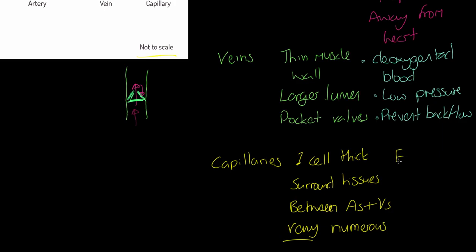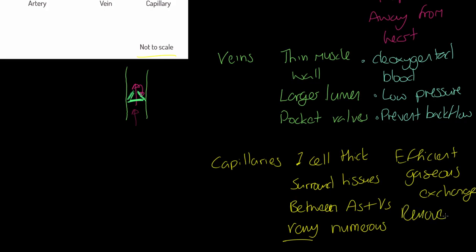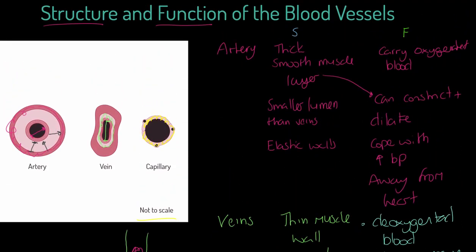What do capillaries do? They are there for efficient gaseous exchange. They're one cell thick and partially permeable, so gases can pass across through the process of diffusion. Finally, they remove waste products — for example, carbon dioxide from aerobic respiration is released from the muscle into the blood and transported back to the lungs where it can be breathed out as waste. So, that's our structure and function of blood vessels covered.